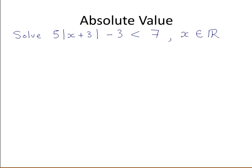We are asked to solve 5 times the absolute value of x plus 3 minus 3 is less than 7, where x is an element of the real numbers.